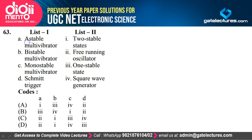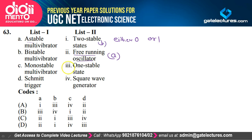Question 63: Matching multivibrators — astable multivibrator has no stable state, oscillates between two quasi-stable states, and is a free-running oscillator (A→2). Bistable multivibrator has two stable states (either 0 or 1) (B→1). Monostable multivibrator has only one stable state (C→3). Schmitt trigger is a square wave generator (D→4). Option C satisfies the explanation.